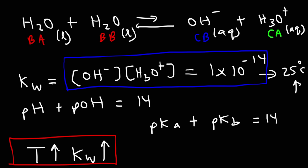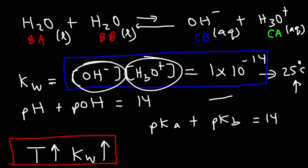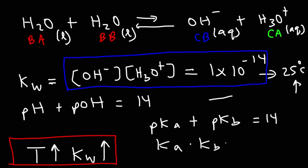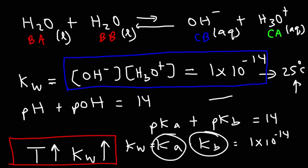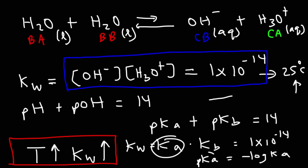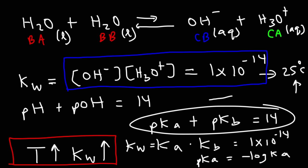Since Kw = Ka × Kb = 1×10⁻¹⁴ at 25°C, if you know Ka you can calculate Kb, and vice versa. The pKa = −log(Ka) and pKb = −log(Kb). If you have Ka you can calculate pKa, and using pKa + pKb = 14 you can find pKb. There are many equations connecting these values.